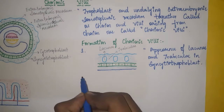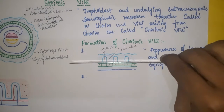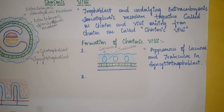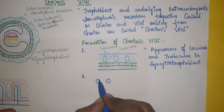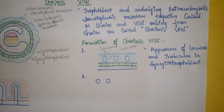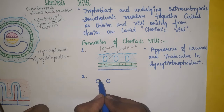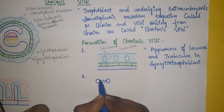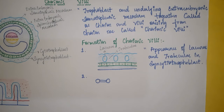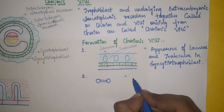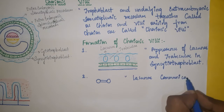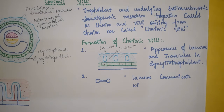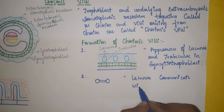The second step: if we take a cross-section, we can see the lacunae on either side and the trabeculae between them. In the later stages, two lacunae communicate with each other and form one larger space. So step two is: lacunae communicate with each other.